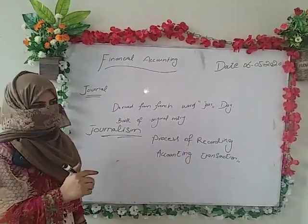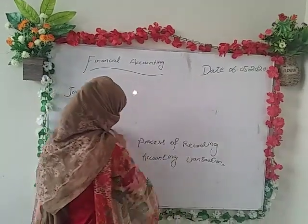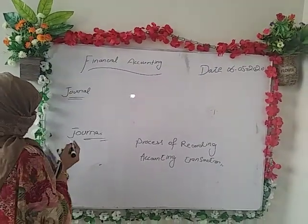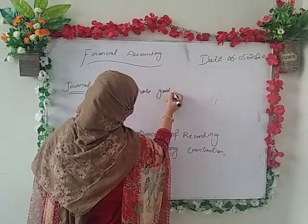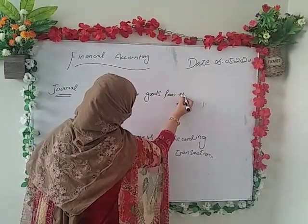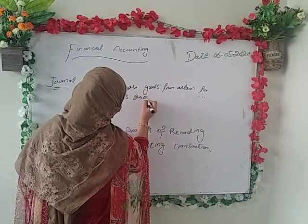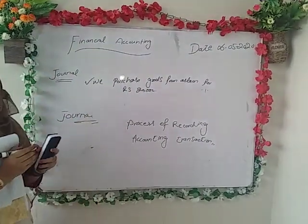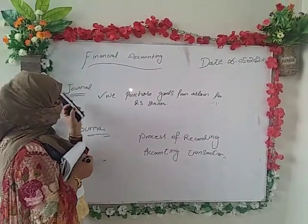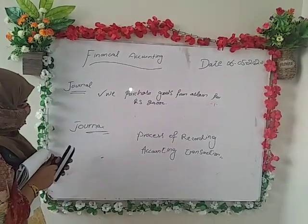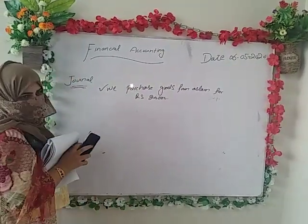Journalism — yeh ek process hai. Matlab hamne koi cheez purchase ki, for example, we purchased goods for Rs. 20,000. Yeh ek transaction hai. Accounting me yeh transaction hai — isse where we record is called journalism, the recording which we do. As for general journal, I explain how we process it, what type of entries are, and what procedure is.